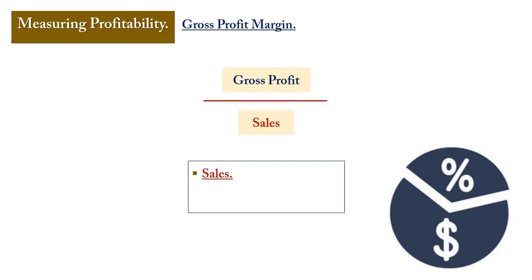If expenditure remains constant but does not drop in proportion to the sales drop, the gross profit will come down. Conversely, if the current year's gross profit margin exceeds the prior year's, it could be due to increases in selling price leading to higher sales value — and if there is no commensurate increment in production cost, the gross profit margin will go higher. Also, if sales increased 10% but production cost rose 15%, the gross profit margin will reduce.